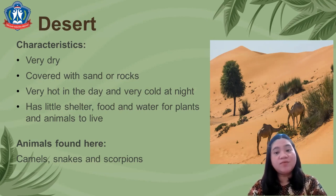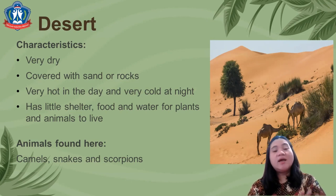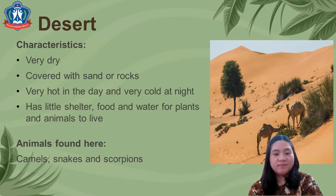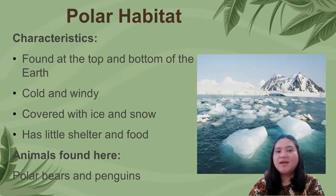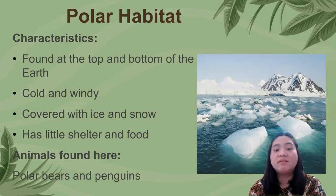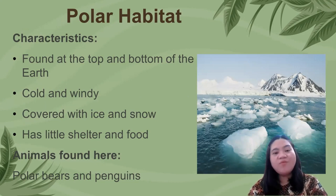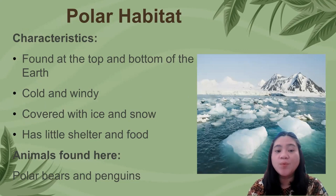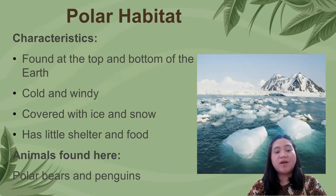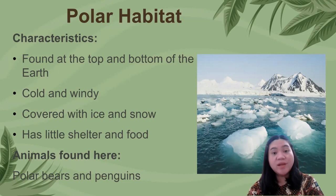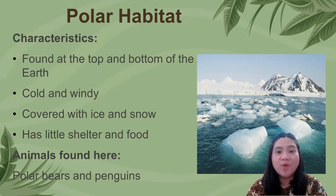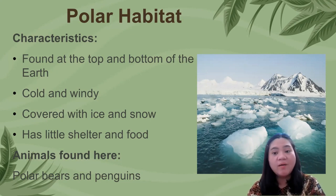Plants found in the desert include cacti, or cactus. Next, polar habitat. The characteristics are: found at the top and bottom of Earth, cold and windy, covered with ice and snow, and has little shelter and food. Animals found here include penguins and polar bears.